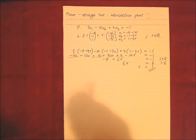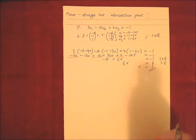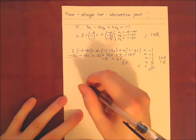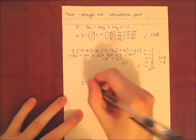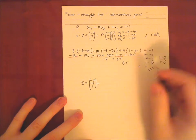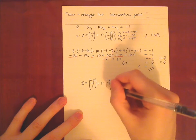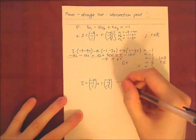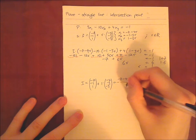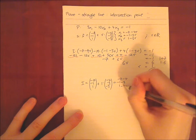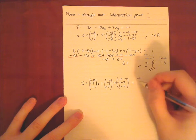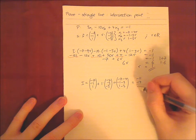Now we put r equals 1 into our straight line definition. The intersection point is (minus 7, minus 1, 1) plus 1 times (minus 4, minus 3, minus 3), which gives (minus 7 minus 4, minus 1 minus 3, 1 minus 3) = (minus 11, minus 4, minus 2).